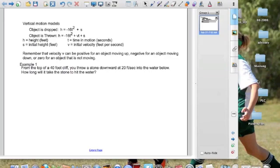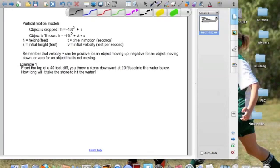Let's take a look at the example. And now remember, you're going to be using these formulas, and then you're going to end up having to use the quadratic formula to solve this equation. All right, so from the top of a 40-foot cliff, you throw a stone downward at 20 feet per second into the water below. How long will it take the stone to hit the water? Well, let's look at our equation here.